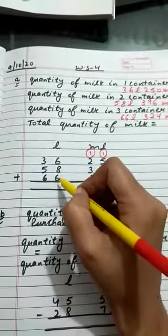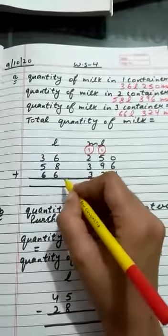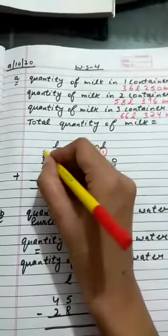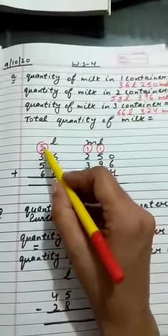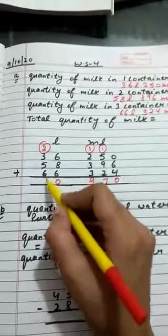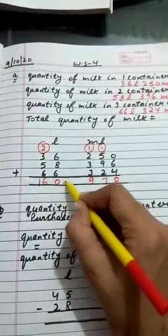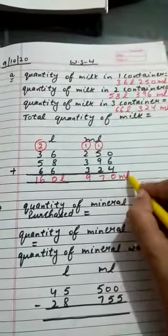Now 6 plus 6 is 12, and 12 plus 8 is 20. Write 0, carry 2. Now 2 plus 5 is 7, 7 plus 3 is 10, 10 plus 6 is 16. So we get 160 liter 970 milliliter.